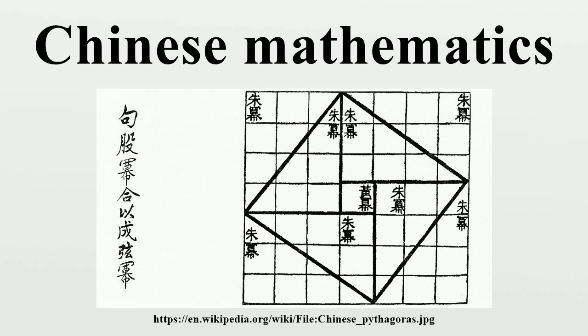Simple mathematics on oracle bone scripts date back to the Shang dynasty. One of the oldest surviving mathematical works is the Yijing, which greatly influenced written literature during the Zhou dynasty. For mathematics, the book included a sophisticated use of hexagrams.